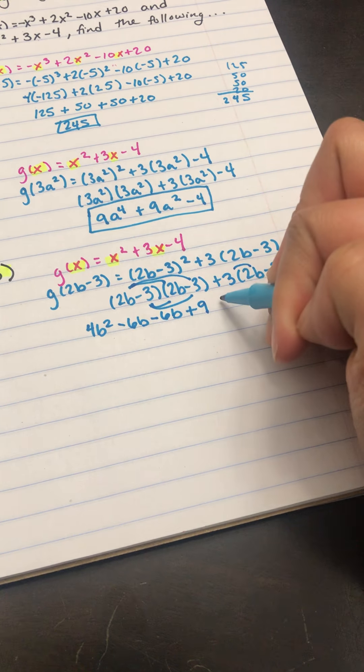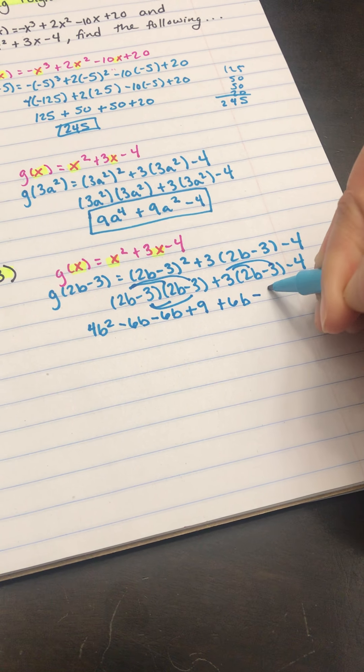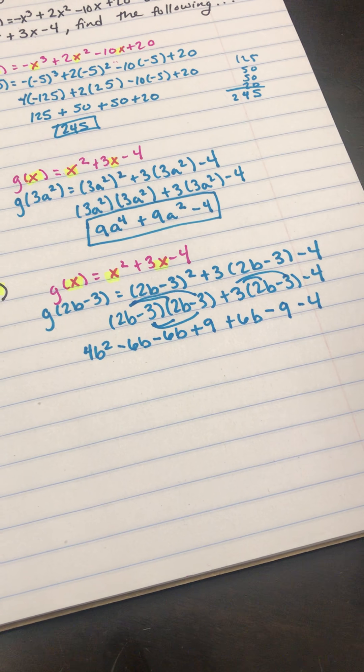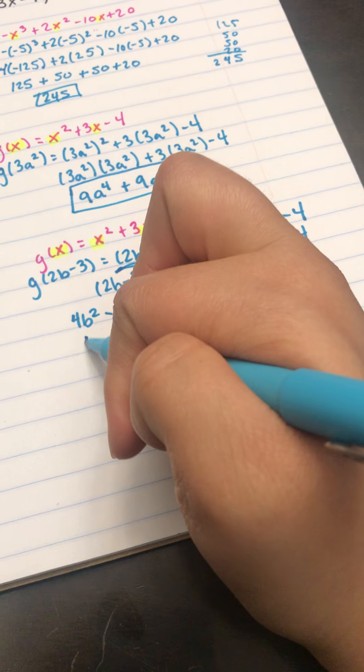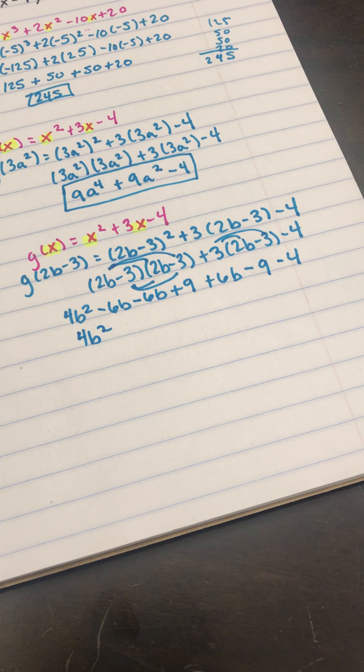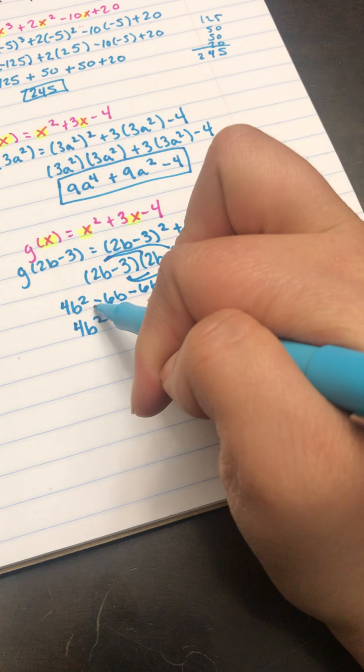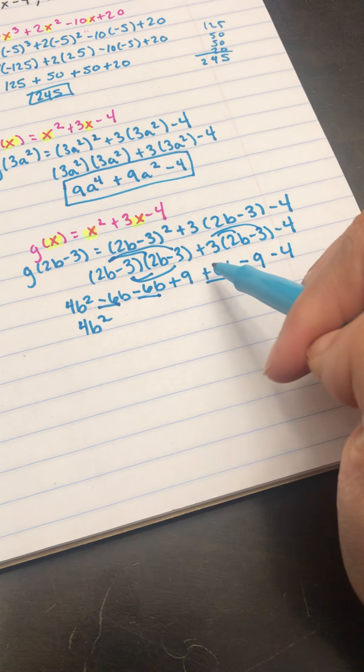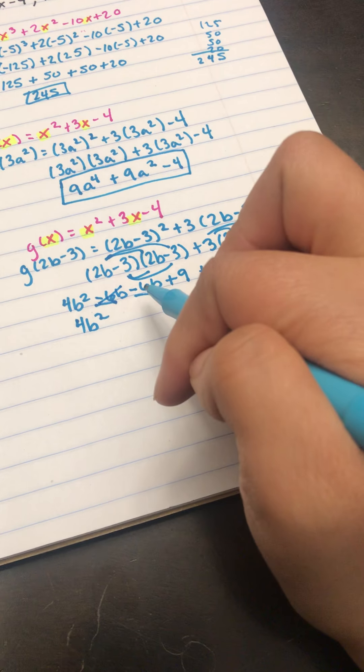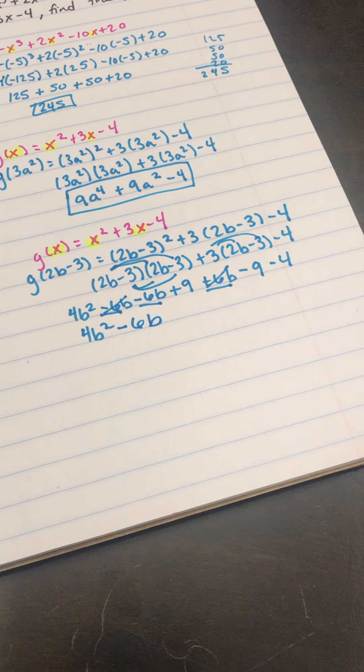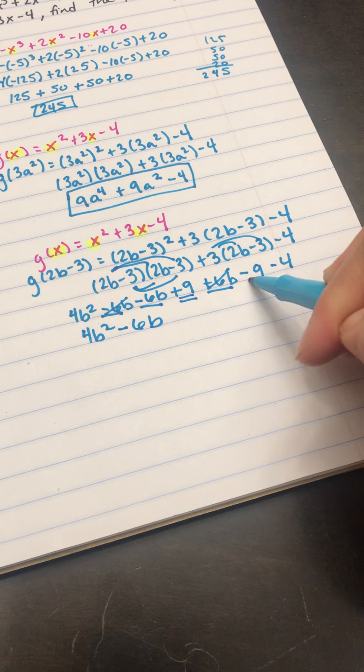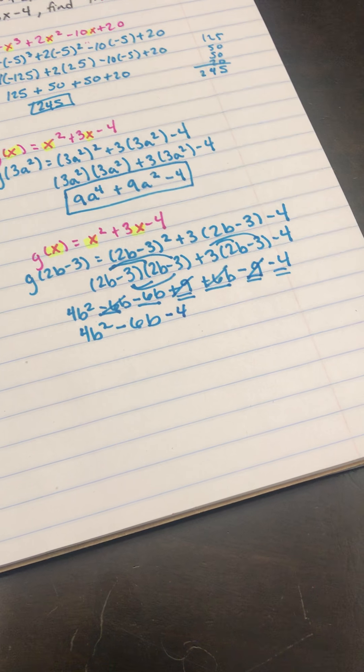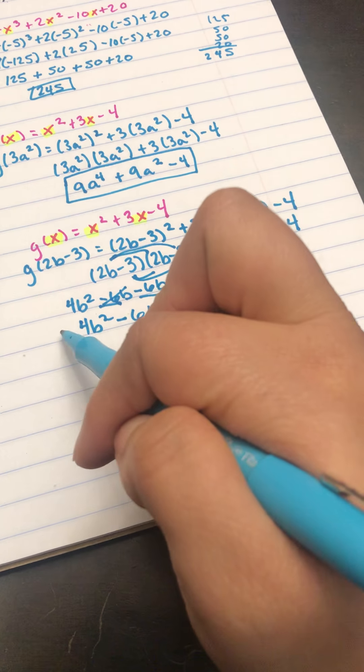Here, 3 times 2b is 6b, and 3 times negative 3 is negative 9. So now that I've multiplied, I can start to combine like terms. The only b squared there is the 4, so this stays 4b squared. Now I'm going to combine the terms that have a b. I have negative 6b, negative 6b, and positive 6b. The negative 6 and positive 6 cancel because that's 0, so we're really just left with negative 6b. And then we're left with 9 minus 9 minus 4. 9 minus 9 cancels, so it's just minus 4. And since none of those are like terms, you can leave your answer like that.